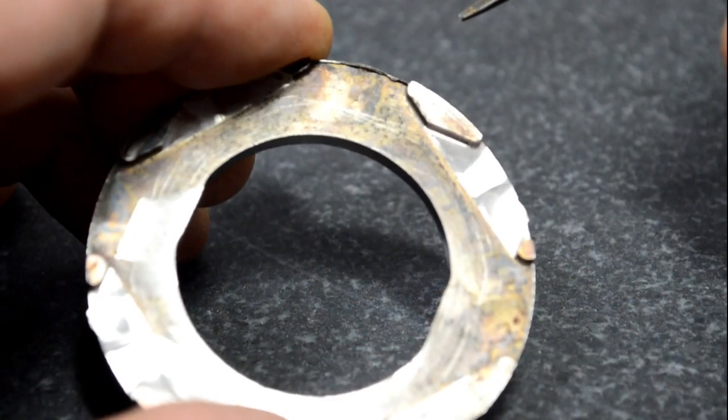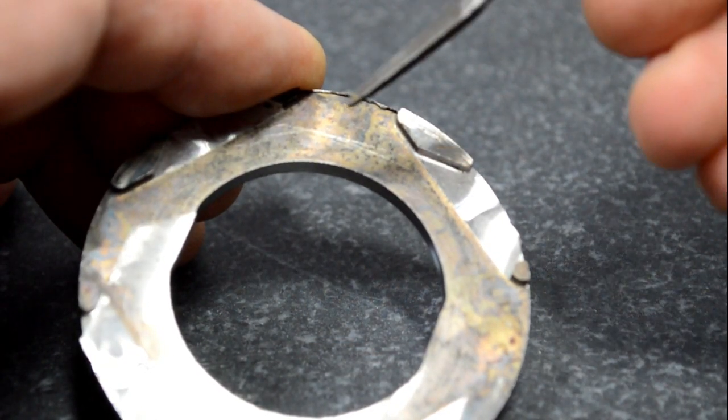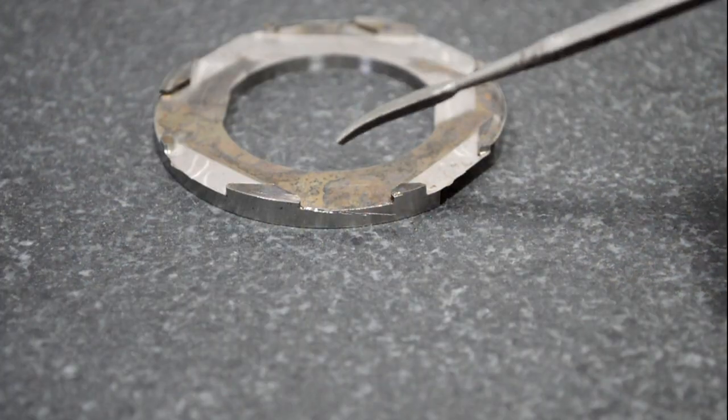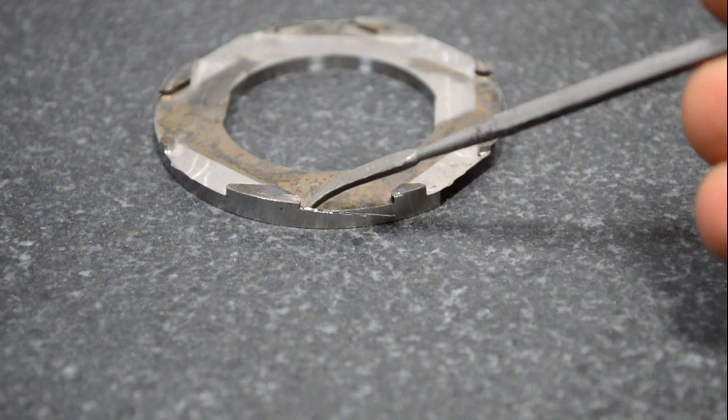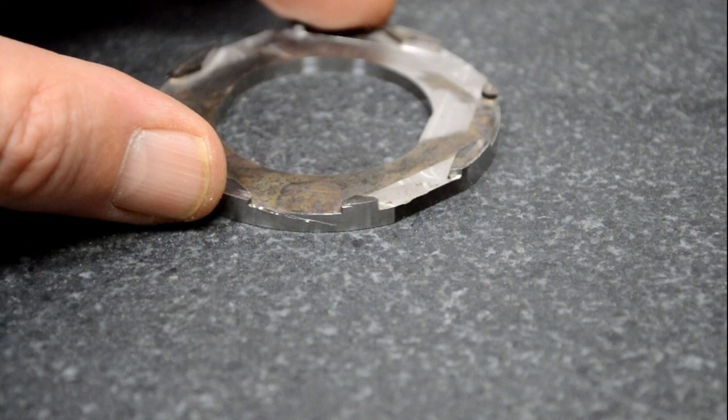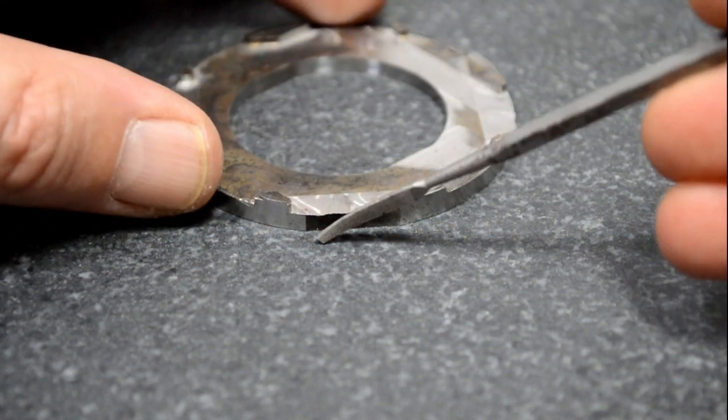I've got a machine component here and we can see the burr that's been kicked up on the edge. This is often called a rollover burr.